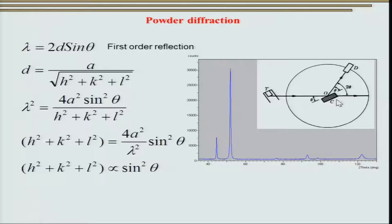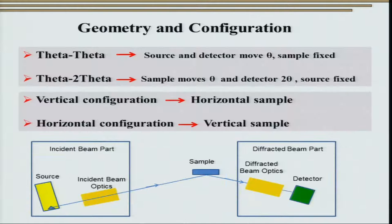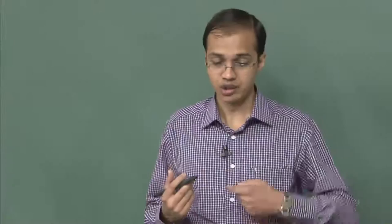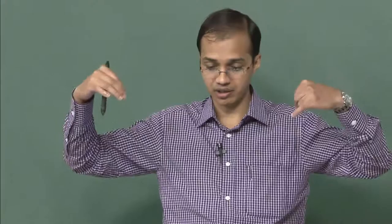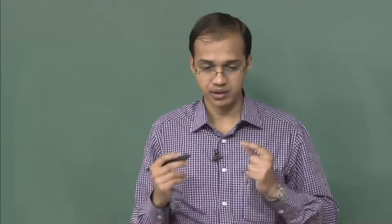Another configuration used routinely is the vertical versus horizontal configuration. The vertical configuration has the source and detector on a vertical circle, so the sample sits on a horizontal sample holder — ideal for studying powders easily. However, for studying thin films or carrying out texture analysis, a horizontal configuration may be preferred, which keeps the sample vertical.